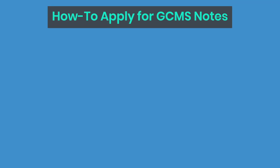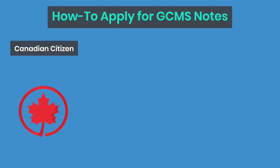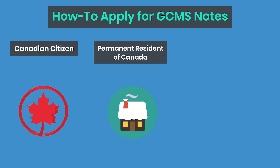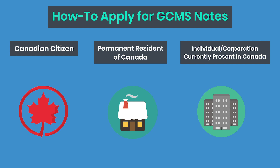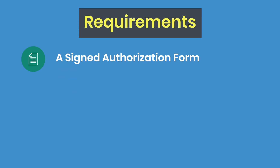To apply to receive the notes from your visa rejection, also known as GCMS notes, if you reside outside of Canada, you will need either a Canadian citizen, a permanent resident of Canada, or an individual or corporation currently present in Canada to apply for you. If you do not have anyone who can apply for you, ApplyBoard can submit this request for you.